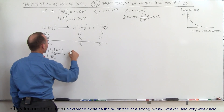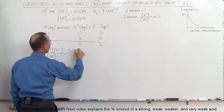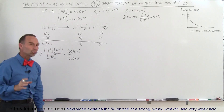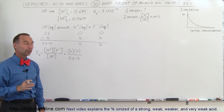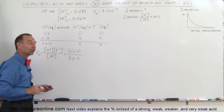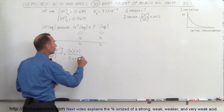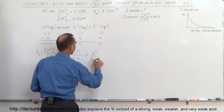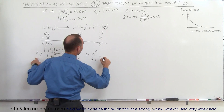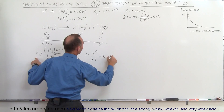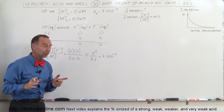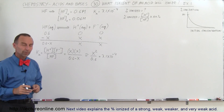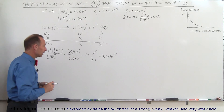In this case this will be equal to x times x divided by 0.6 minus x. Again, let's assume that x is a very small number — less than 5% of the original concentration. If it is, we can make the assumption that this is approximately x squared divided by 0.6, and that has to equal the ionization constant of 7.1 times 10 to the minus 4. Once we get the final result, we'll check to make sure it's less than 5%.